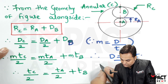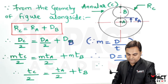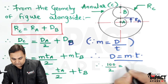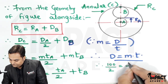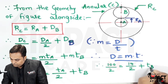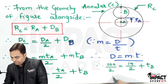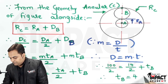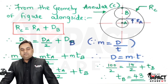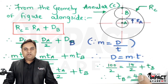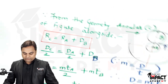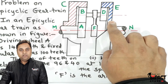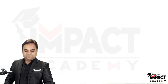From this equation: TC is 100 and TA is 14, so the number of teeth on wheel B comes out to be 43. Now that the number of teeth on all wheels are known, we can go for the remaining part — finding the speed of wheel E using the tabular method.